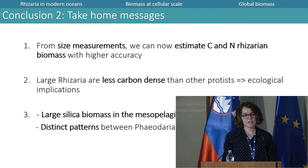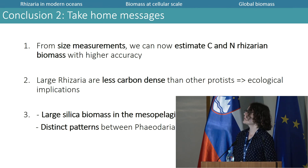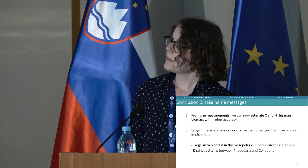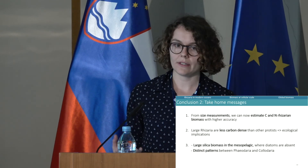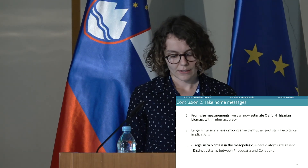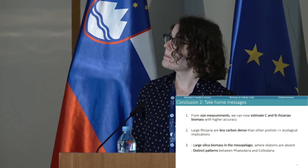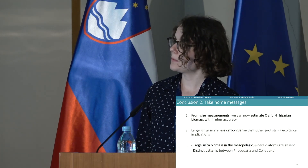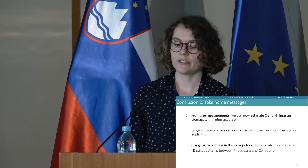A few take-home messages: from size measurements we can now estimate carbon and nitrogen Rhizaria biomass with higher accuracy. These results gave us clues about Rhizaria ecology — they are less carbon-dense than other protists. At global scale, we observed a large pool of biomass in the mesopelagic layer where diatoms are absent, and we also observe distinct distribution patterns between Phaeodaria and Collodaria.